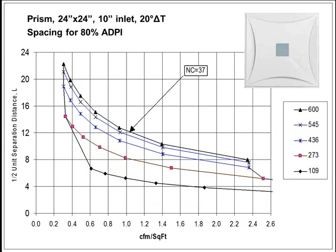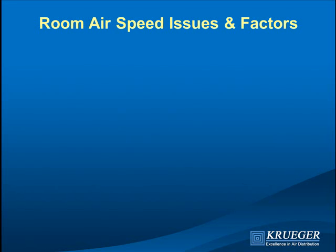We have other diffusers that fit the same backpan. The Prism is designed to replace the perf face in that same backpan. Running the same analysis, diffusers can be placed further apart and turned down to 0.4 CFM per square foot. Other diffusers will go down to 0.2 CFM per square foot. As for stuffiness complaints at low airflows — stuffy is a thermal comfort complaint meaning slightly warm, not an indoor air quality issue. A California research study found no problems running at 0.2 CFM per square foot in offices.